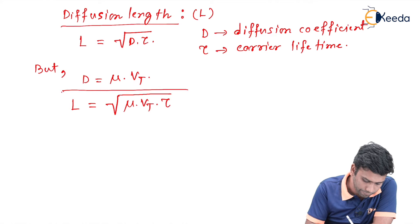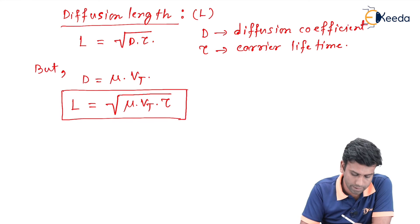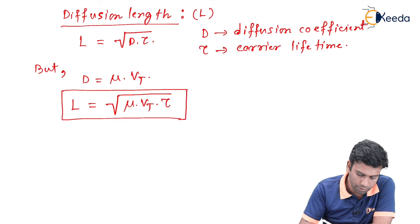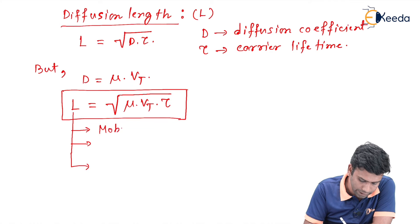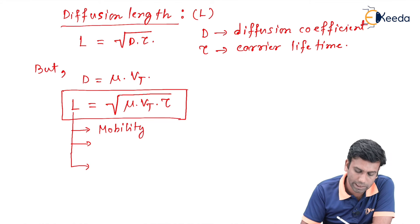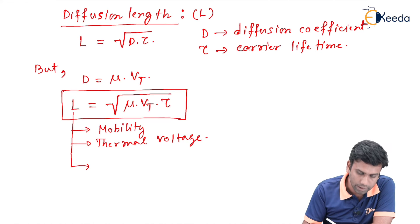So this is the final equation of the diffusion length of the carriers inside the semiconductor. Now, from this equation we can see that the length of diffusion depends on three factors: first one is the mobility value of the carriers, next one is the thermal voltage, and third one is the carrier lifetime.